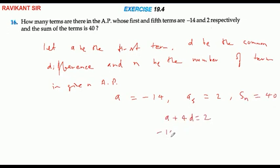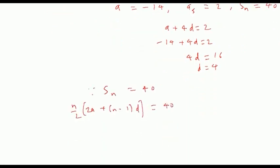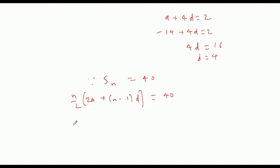Minus 14 plus 4d equals 2, which gives d equals 4. Then using the formula n by 2 into 2a plus n minus 1 into d equals 40. We need to find the value of n. So 2a is minus 14, plus n minus 1, d is 4, equals 40.